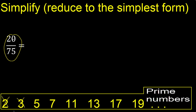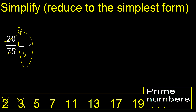Can be divided by 5. 20 divided by 5 is 4, 75 divided by 5 is 15. Finish it, because they cannot be divided by the same number.